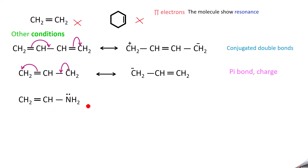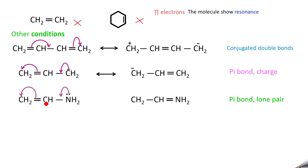Next example: if you have a pi bond and a lone pair, shifting the lone pair and the pi bond gives you another resonance structure with a lone pair on a different carbon. So in summary, for resonance to occur, along with pi bonds you must also have conjugated double bonds, or a charge (positive or negative), or a lone pair, or a free radical.